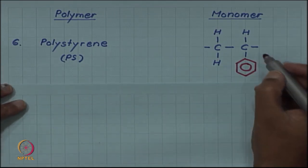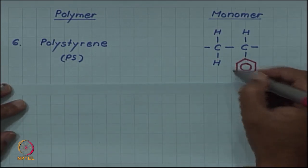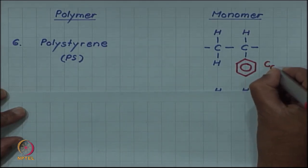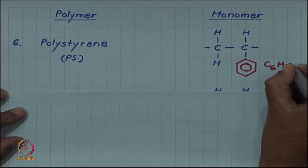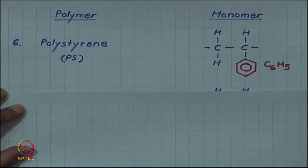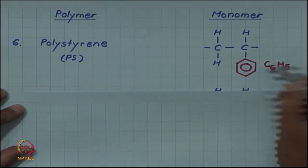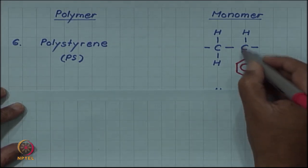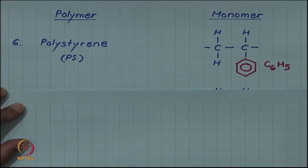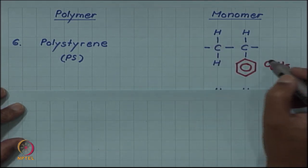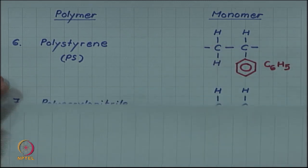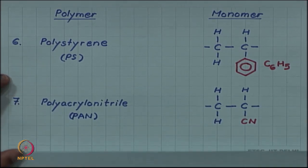We have polystyrene, in which the C6H5 ring — note that C6H6 is a benzene molecule, so C6H5 has one hydrogen replaced, giving it a free bond here to join with the carbon atom in the ethylene molecule. This gives us the monomer of polystyrene.